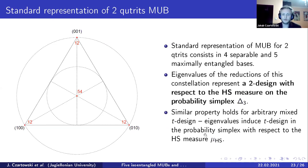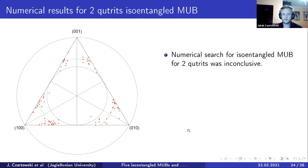Moreover, this property is similar for arbitrary dimension. As soon as we consider eigenvalues of a mixed-state t-design, because we are now talking about single reduction, we are getting a t-design for the probability simplex with respect to the Hilbert-Schmidt measure. We have also conducted a simple numerical search for two qutrits, iso-entangled MUBs in terms of purity.